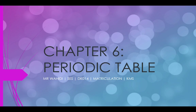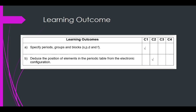Assalamu'alaikum and hello to all. Today we are going to study Chapter 6: Periodic Table. Learning outcome: at the end of the lesson, you should be able to specify periods, groups, and blocks, and deduce the position of an element from the electronic configuration.